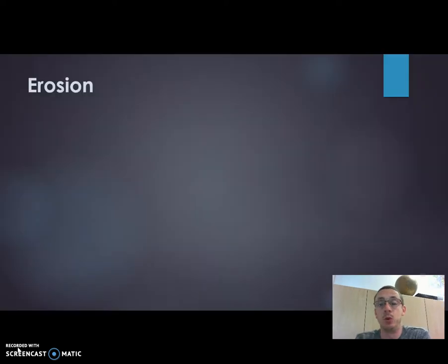Now in terms of erosion we're going to start there. A river can carry out erosion in four main ways: attrition, corrosion, hydraulic action, and chemical solution.